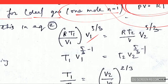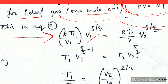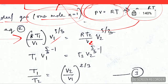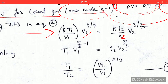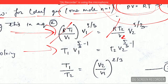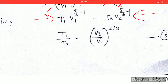After plugging in the pressure values from the ideal gas law, the R on both sides cancels out, and we are left with the relation between temperatures and volumes: T₁V₁^(γ-1) = T₂V₂^(γ-1).